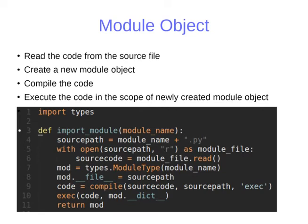Here is a simple Python code replication of how a module is created. Given a module name, it appends .py to find the filename, opens it, reads the whole code, then creates a module type — a module object. Then it compiles the source into bytecode using the built-in compile() function with source code, source path, and exec mode. Finally, it executes that bytecode in the module's dictionary scope, and the resulting object is returned to the user as a module.